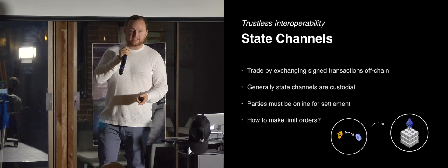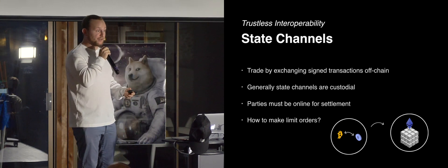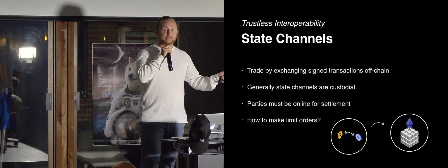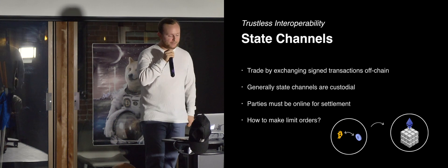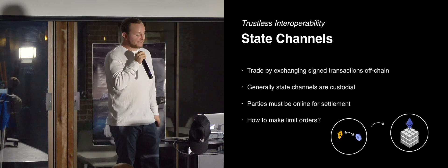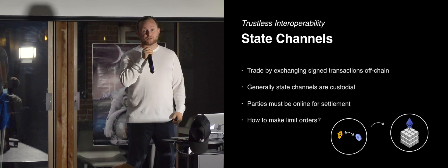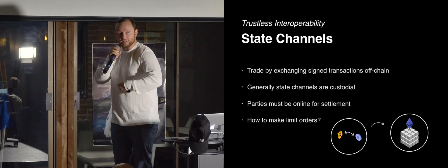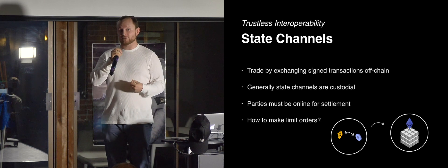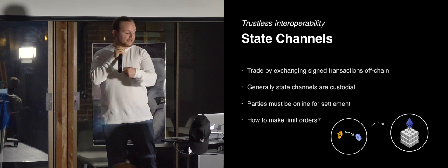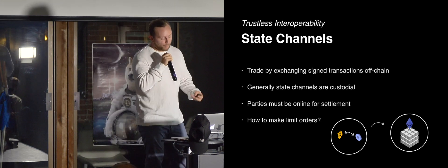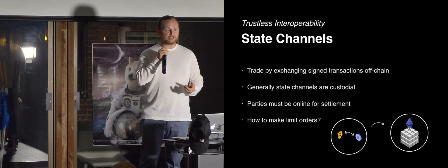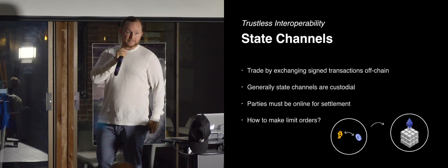State channels are a way to make this process faster — you can move to off-chain transactions that you sign and send between one another. A few problems: these state channels are generally custodial, so when you're trading on the 0x protocol the idea is that you don't have to relinquish control of your asset. Moreover, the parties have to be online during the settlement phase, which makes it really hard to create limit orders.